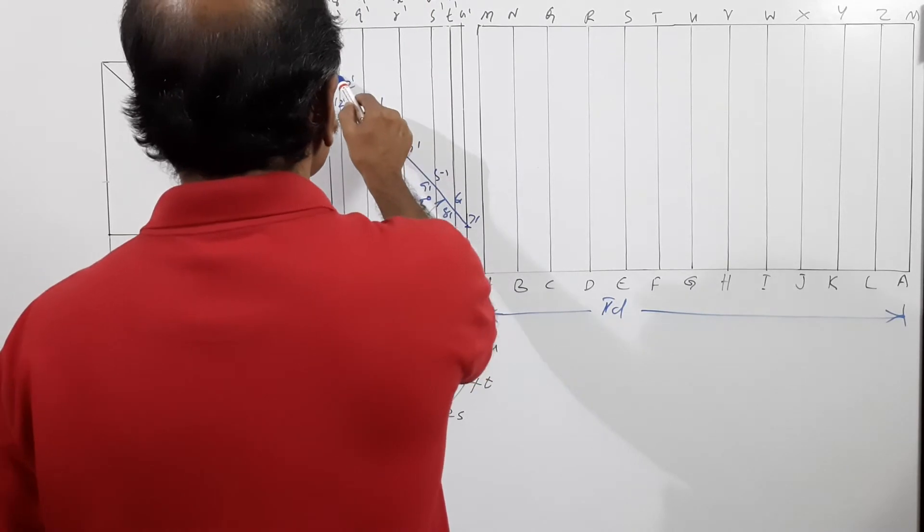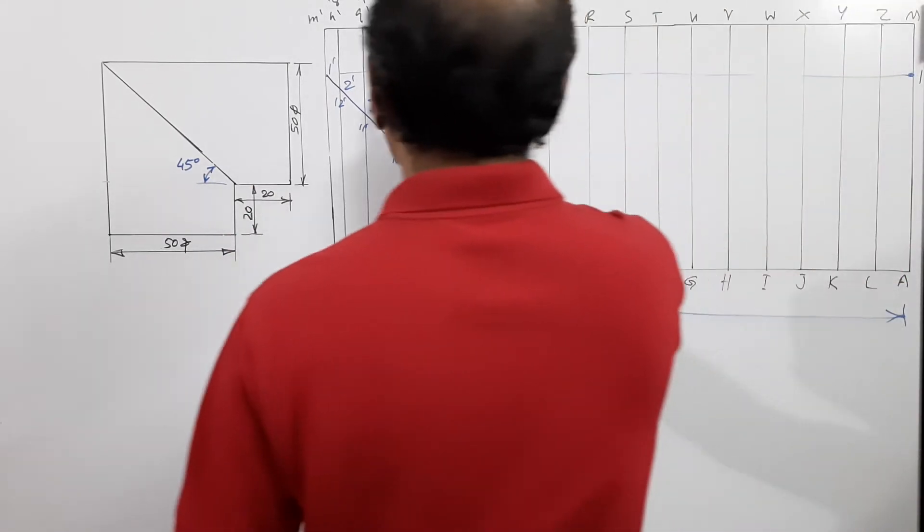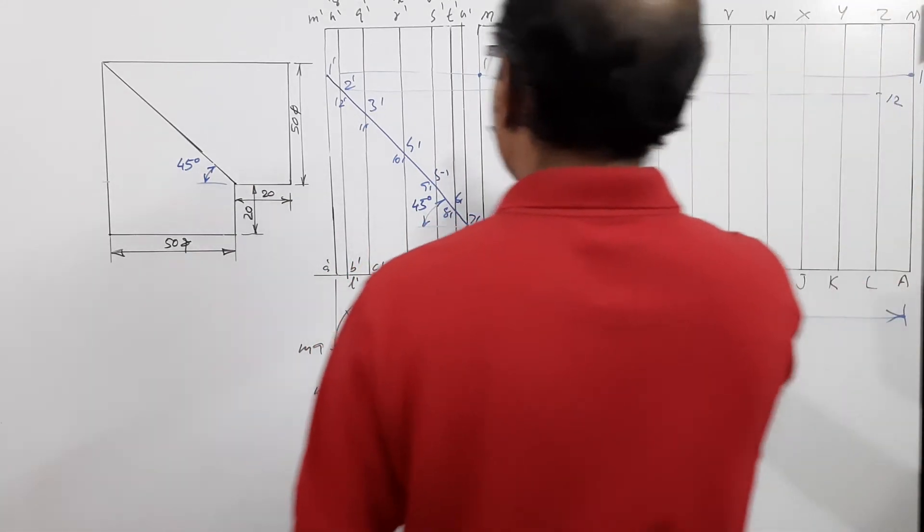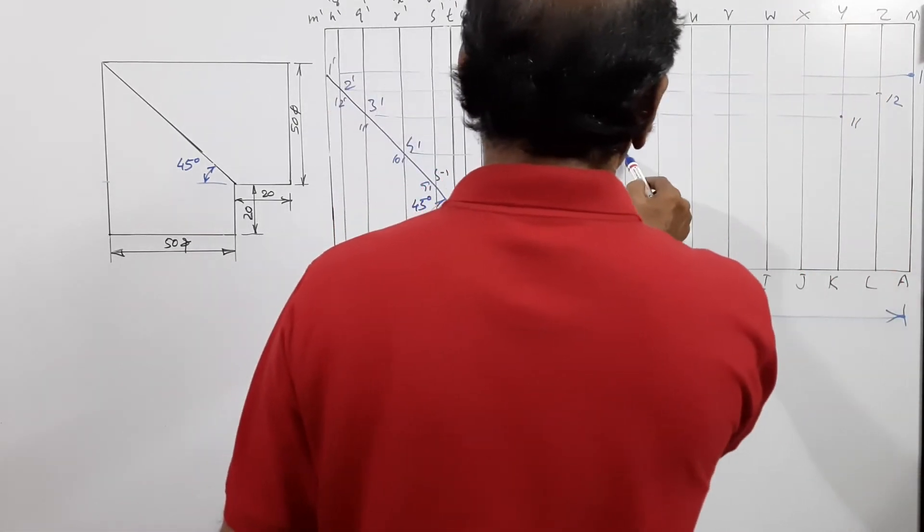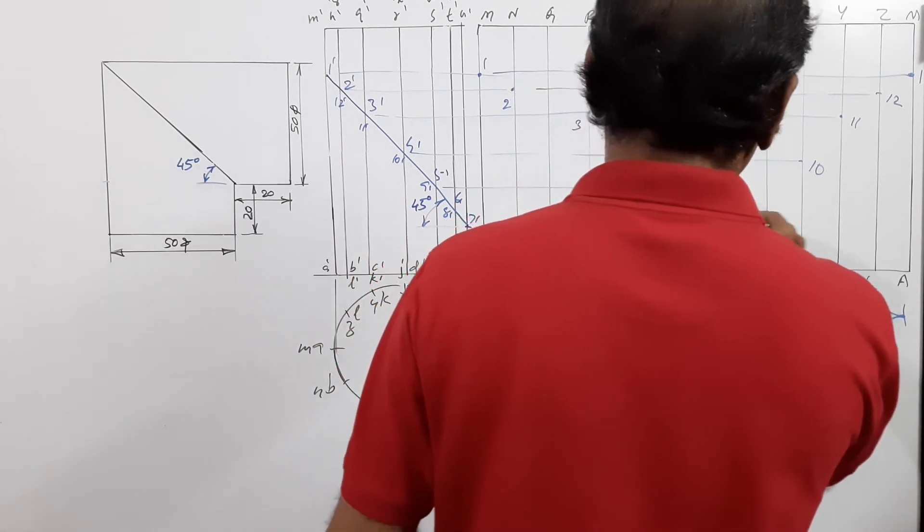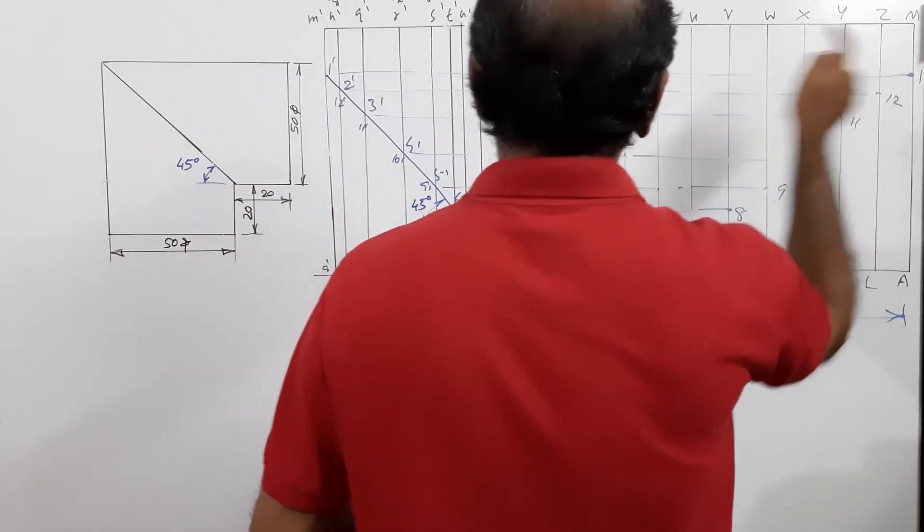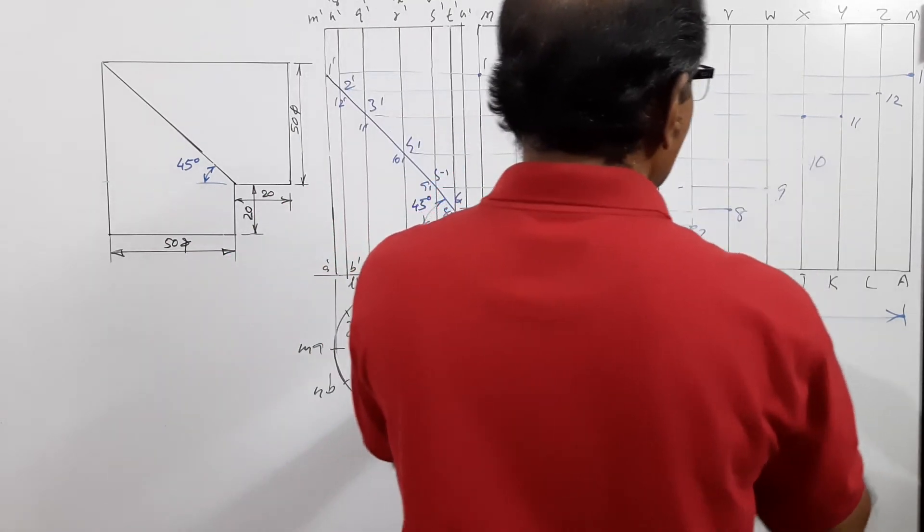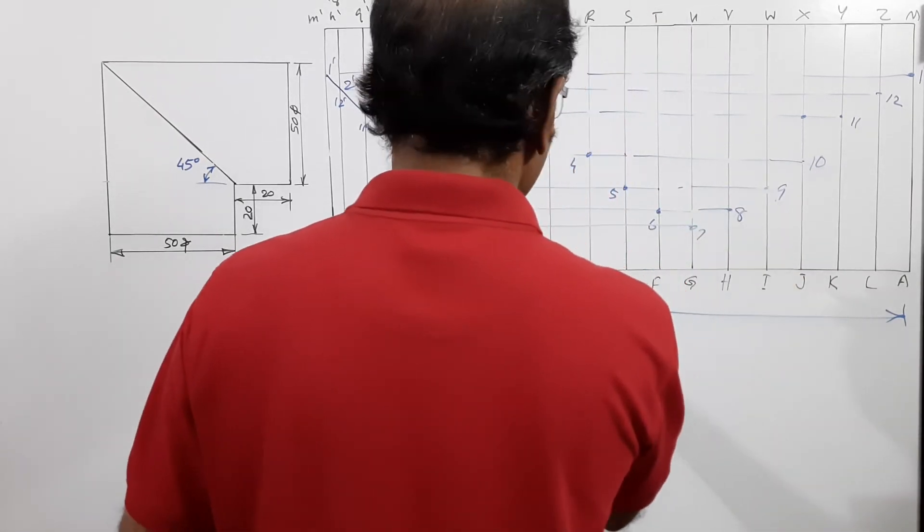How do you bring it into the development? Draw horizontal line through 1 dash. 1, extend it, you have got a 1 there also. 2, 12, 3, 11, 4, 10. 2, 12, 3 dash, 3, 11, 4 dash, 4, 10. 5 dash, 5, 9, 6 dash, 8 dash, 6, 8, and 7 dash, 7.